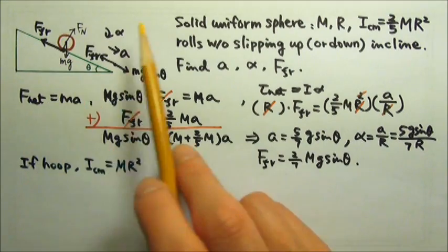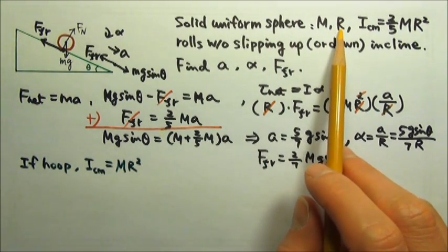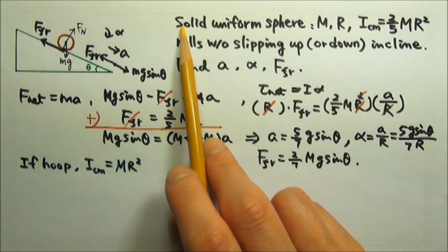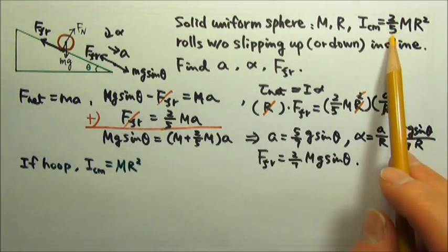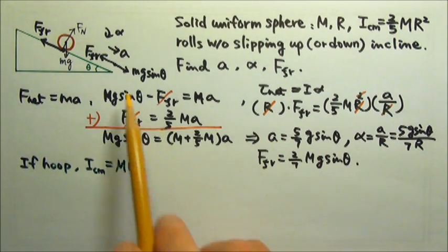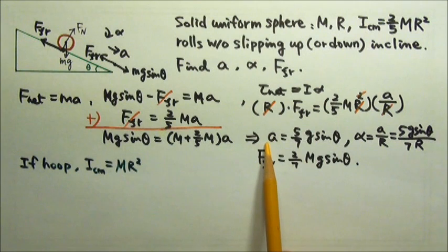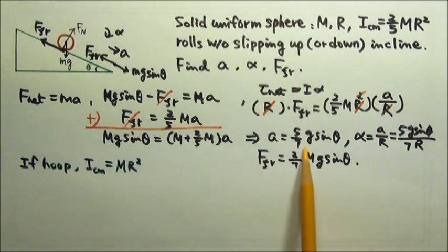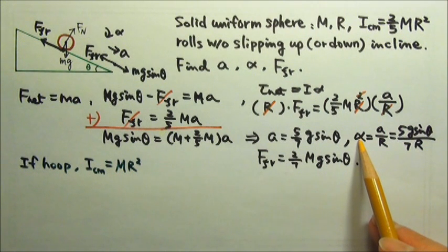So if I have two solid uniform spheres with different mass, different radius, but because they have exactly the same kind of mass distribution, so this 2 fifths part is exactly the same, that means that they would roll without slipping along the same incline at the same acceleration, although different r would provide a different angular acceleration.